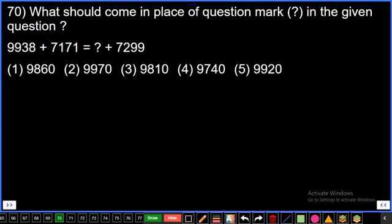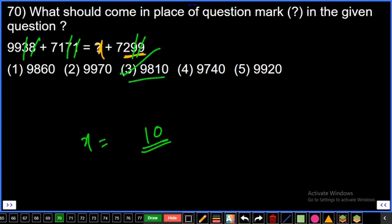Question number 70: Calculate x value. 8 plus 1 is 9. 9 minus 9 is 0, so x must be ending with 0. Next, 3 plus 7 is 10, minus 9 is 1, so answer must be ending with 10. Answer ending with 10 is third option.